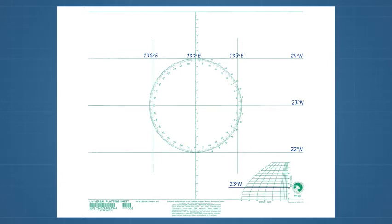The plotting sheet is now constructed. We will plot the 1400 fix and advance it to the calculated time of sunset to determine the 1715 dead reckoning position. To plot the 1400 position, make a mark at 16 minutes above the 22 degrees north latitude.